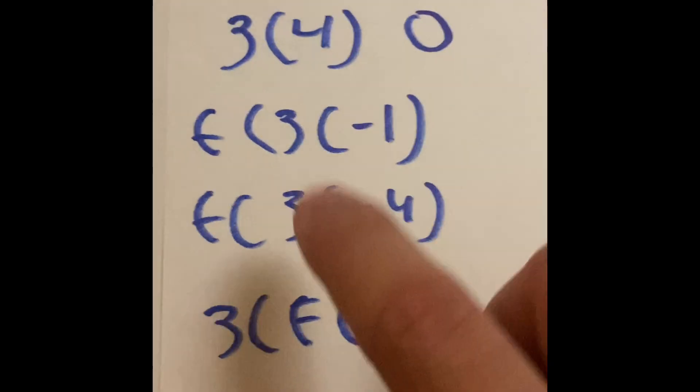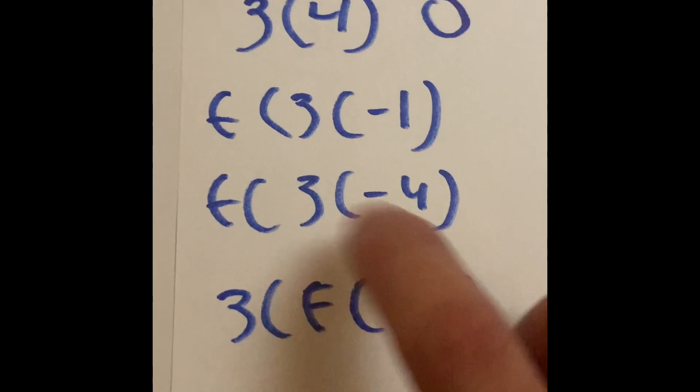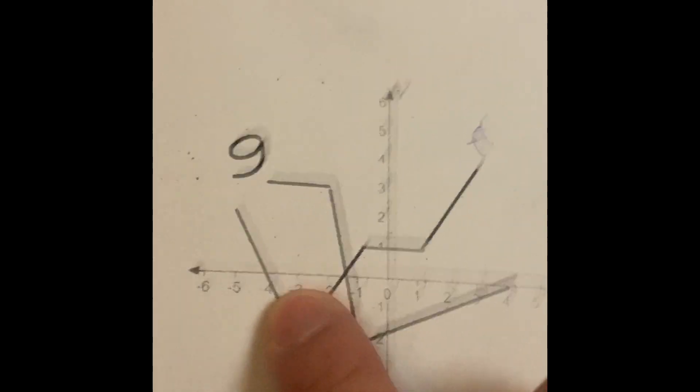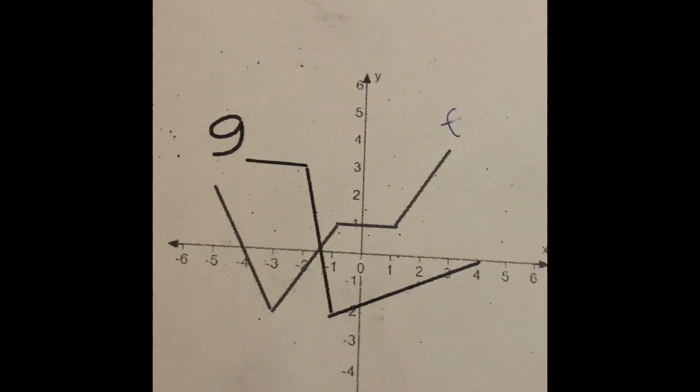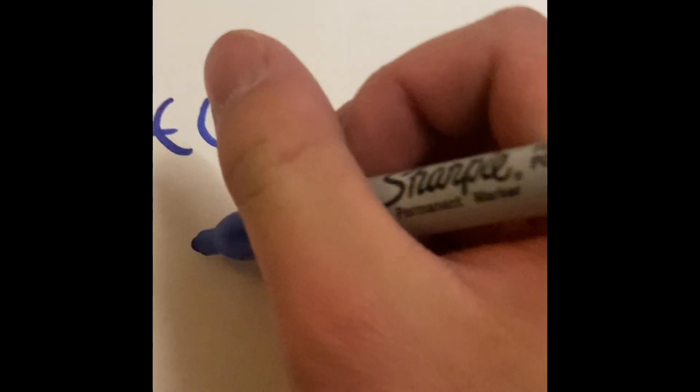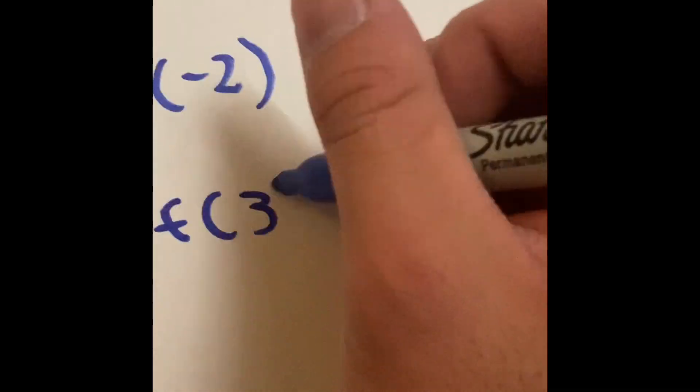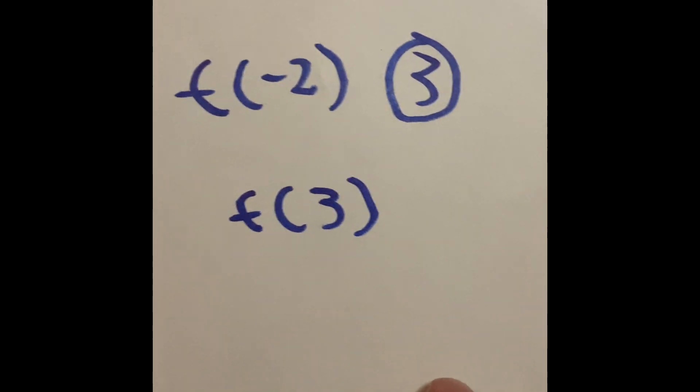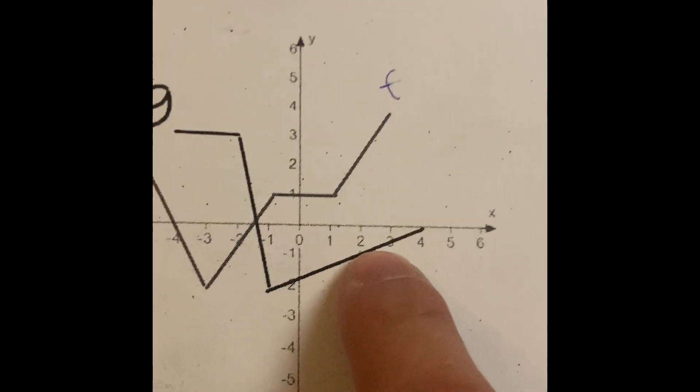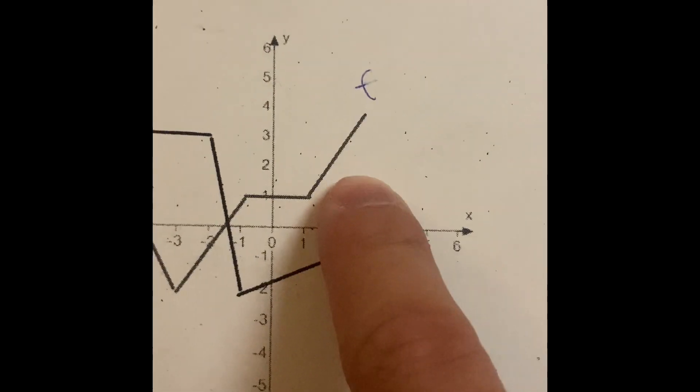Next one is the same thing. So we have f of g of negative four. So the g of negative four. We have zero, one, two, three, four, and g is going to be three. But we're not done yet. We still need to go to the f line. So we have the function of positive three. So the function of positive three, we go one, two, three. And when you go to three, it's going to be a weird decimal.